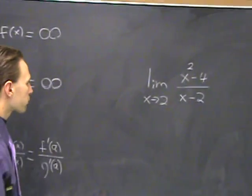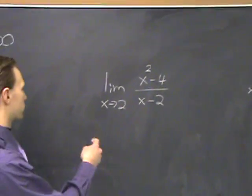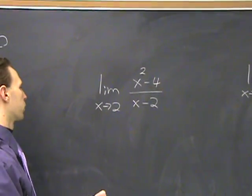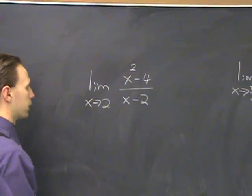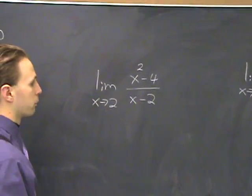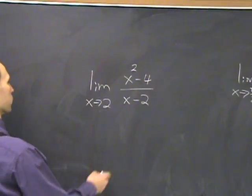For example, this thing here. The first thing that you do with these limit problems is try to plug in the number that it's approaching, and when you try to make x 2, you get 0 over 0 indeterminate form. Then you can apply L'Hôpital's rule.